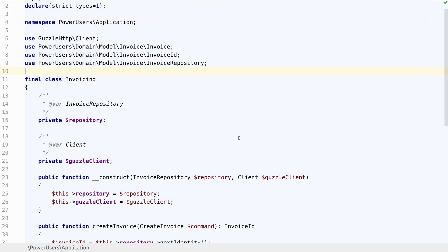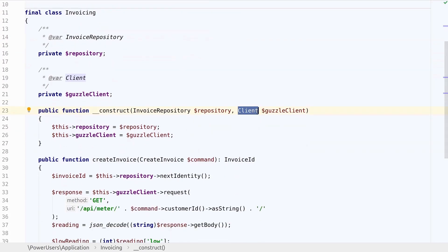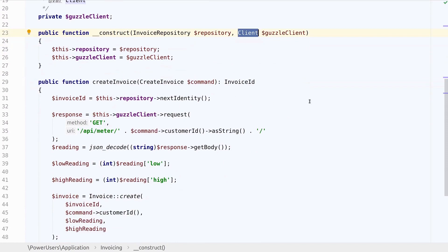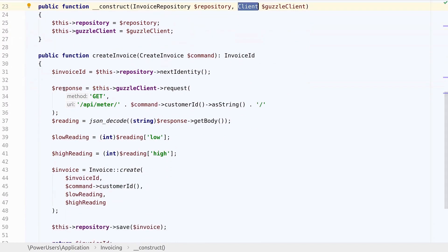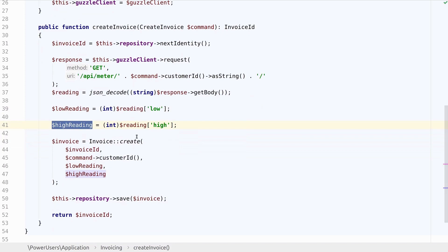And after taking a look at Guzzle's documentation we figure out that we first need to set up an instance of its client object, which we can inject as a dependency here, after which we can make a request to their API using the customer ID from the command object, and its response will be that JSON structure which we can decode, and of course we can get the low and high keys from it, and those will be the actual readings, after which we can just continue creating that invoice.